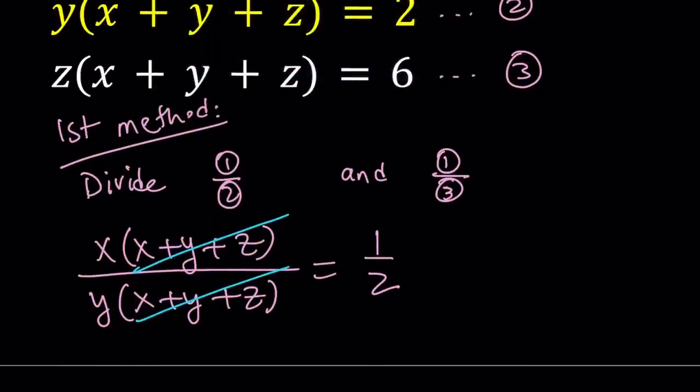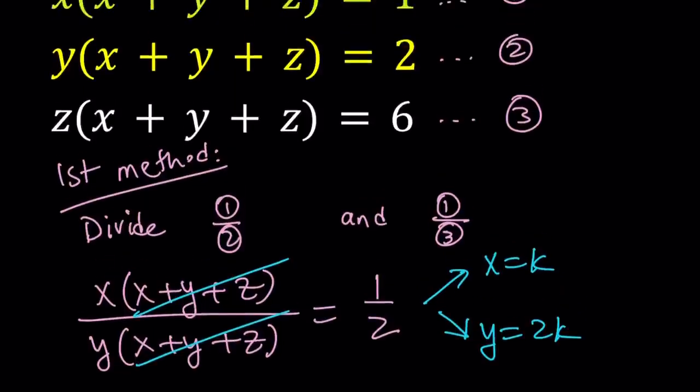Now, from here, we get x to y ratio. You can write y in terms of x or vice versa. But let's go ahead and use a different variable here and write x as k and y as 2k. So the ratio is maintained. And we're going to stick to x equals k because when we do first and third, we can use the same thing.